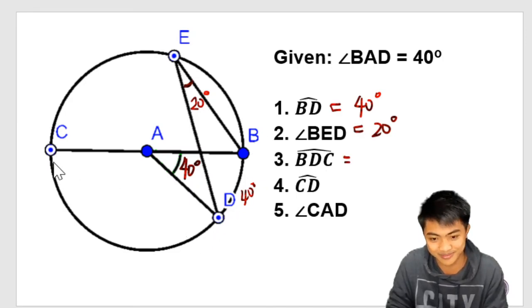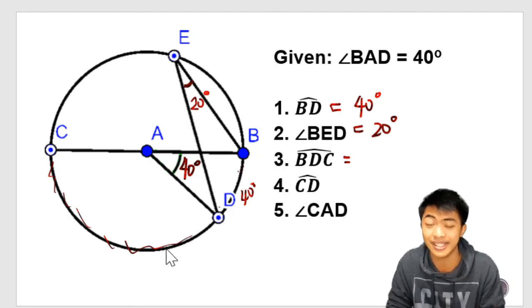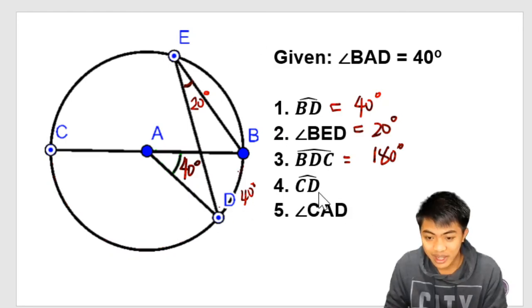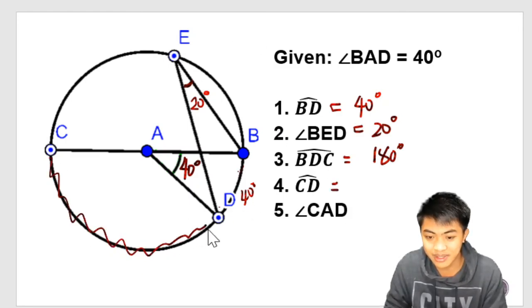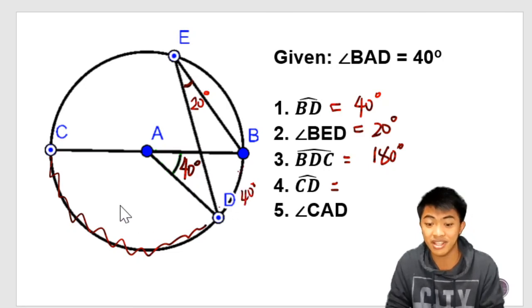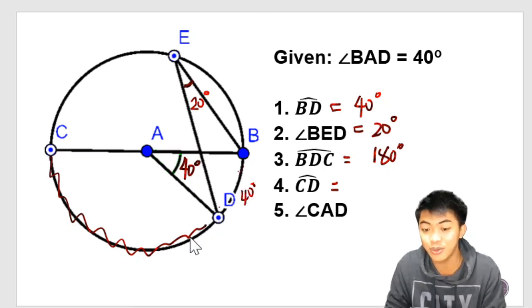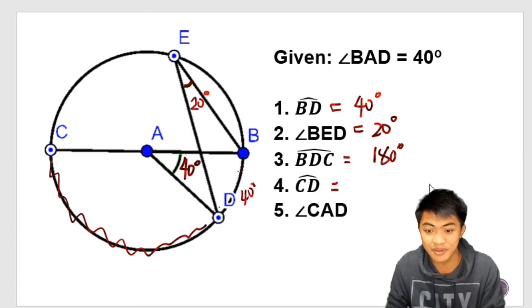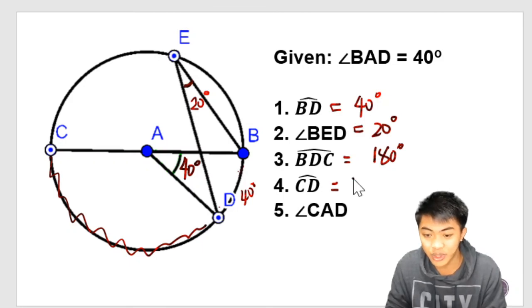Now we have here arc BDC. BDC. Oh. We all know that this is a semicircle. And semicircle measures 180 degrees. Now we have here arc CD. This one here is arc CD. So the whole semicircle is 180. And we do have here a part of it, which is 40 degrees. To get this one, we subtract 40 degrees from the semicircle. So that is 180 minus 40. Arc CD will be 140 degrees.